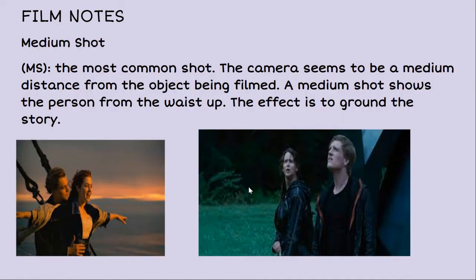A medium shot is the most common shot you're going to use in a movie. The camera seems to be a medium distance from the object being filmed, and it really shows the person from their waist up — as you can see with Titanic and Divergent here. It's exactly what the definition says.